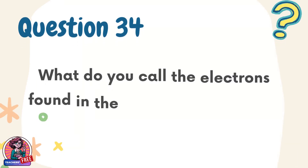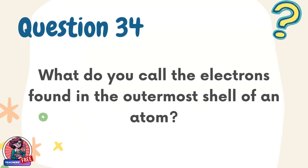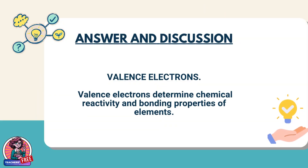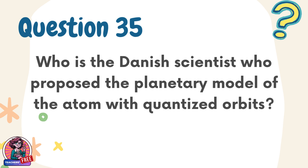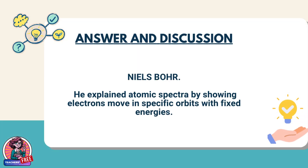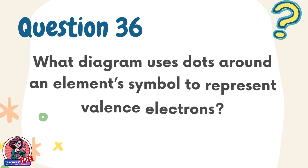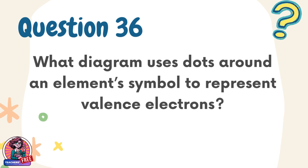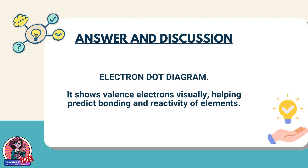Question 34. What do you call the electrons found in the outermost shell of an atom? Answer: Valence electrons. Valence electrons determine chemical reactivity and bonding properties of elements. Question 35. Who is the Danish scientist who proposed the planetary model of the atom with quantized orbits? Answer: Niels Bohr. He explained atomic spectra by showing electrons move in specific orbits with fixed energies. Question 36. What diagram uses dots around an element's symbol to represent valence electrons? Answer: Electron dot diagram. It shows valence electrons visually, helping predict bonding and reactivity of elements.